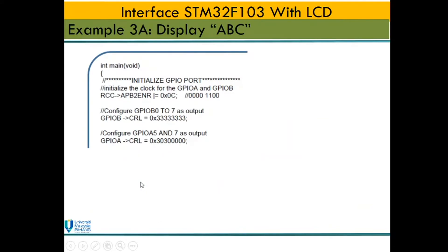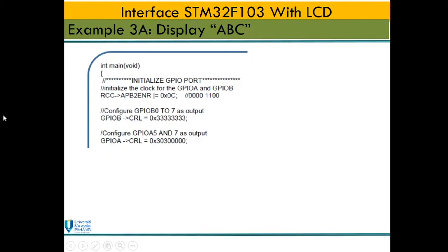The next part is to set up the clock and the GPIO ports. As done in our previous class, we first set the clock for GPIO A and B. In this tutorial, we use two ports, GPIO A and B, so we enable the clock using RCC APB2 enable register 0x0C. Then we configure port B0 to B7 as output, and PA5 and PA7 as output — these are connected to the RS and enable pins.